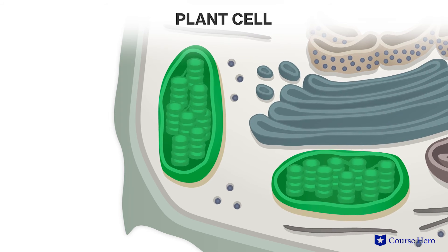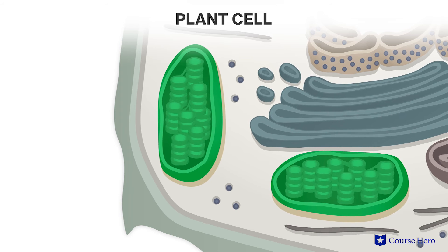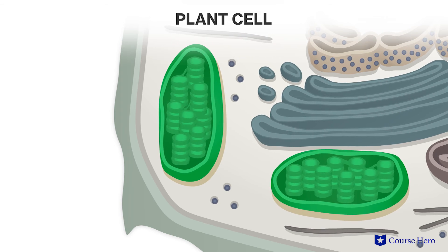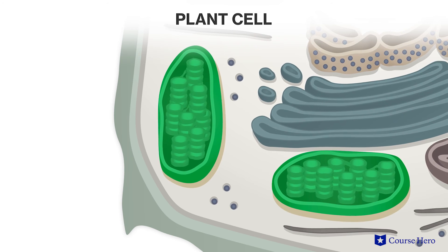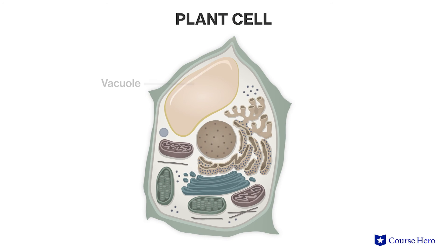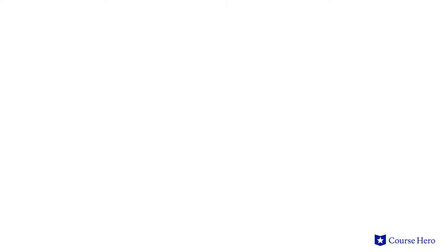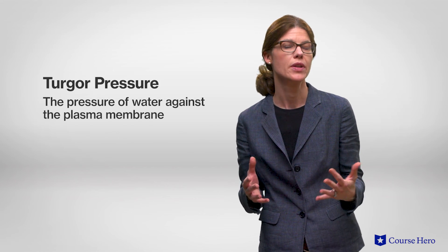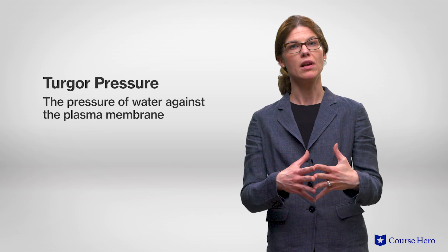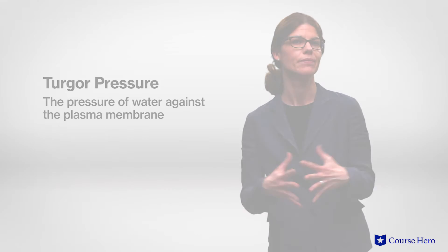Chloroplasts, like mitochondria, have their own DNA and can replicate independently of the cell's replication. The central vacuole is a membrane-bound sac, much like a bubble, that stores nutrients and waste products in plant cells. In addition to its role as a storage compartment, its other main role is to maintain turgor pressure, which is important to help keep plant stems and branches rigid.